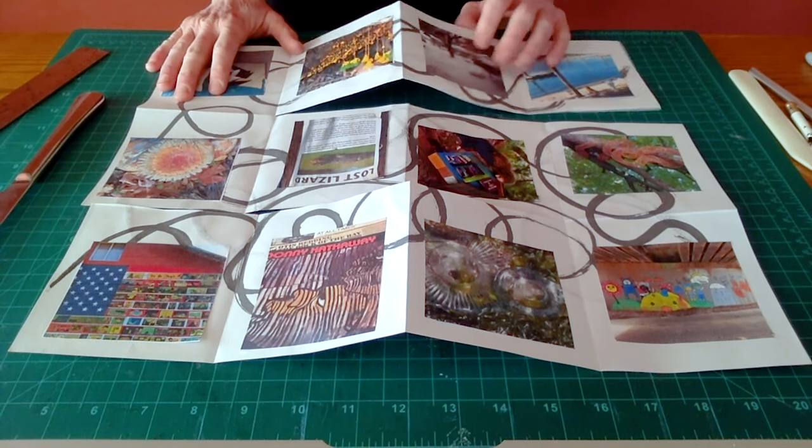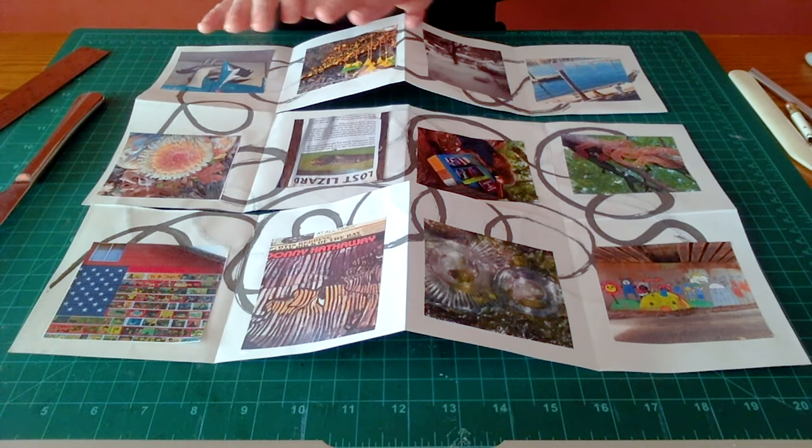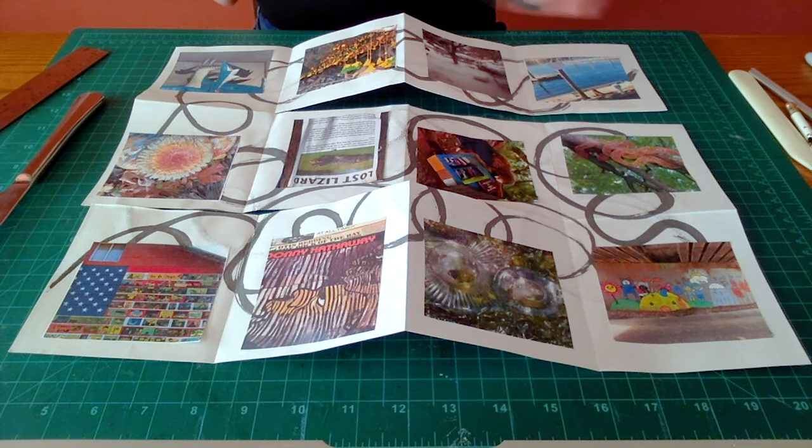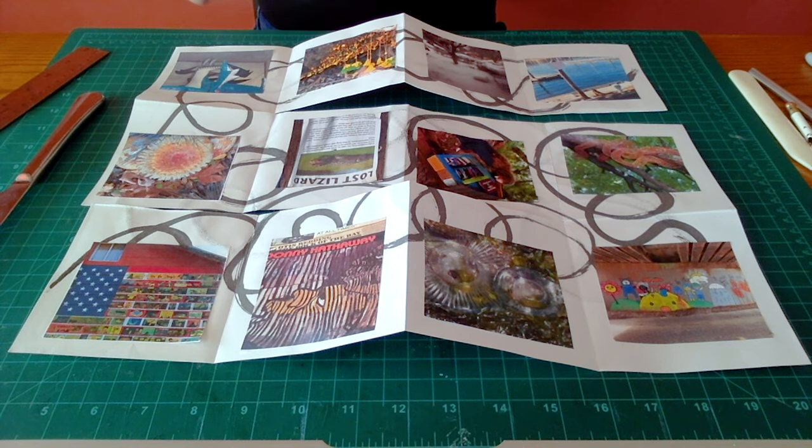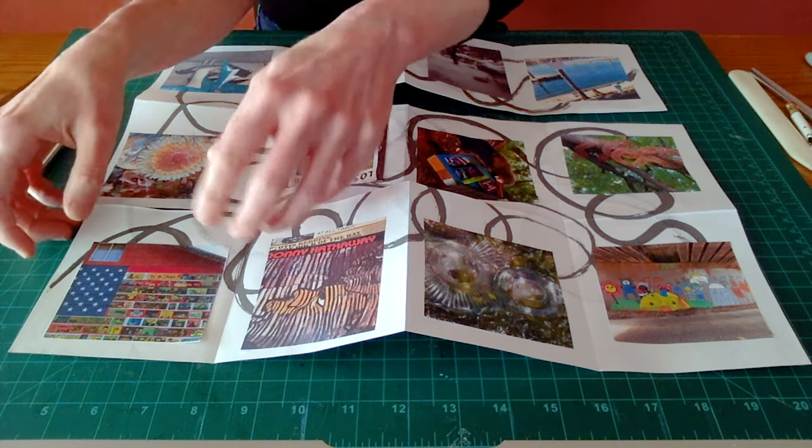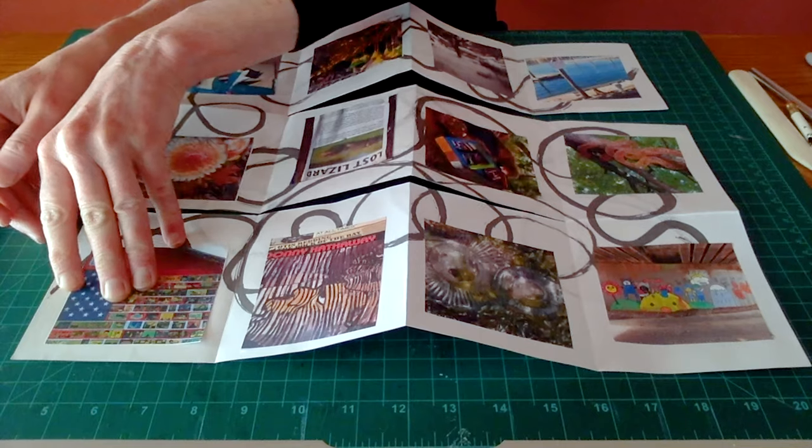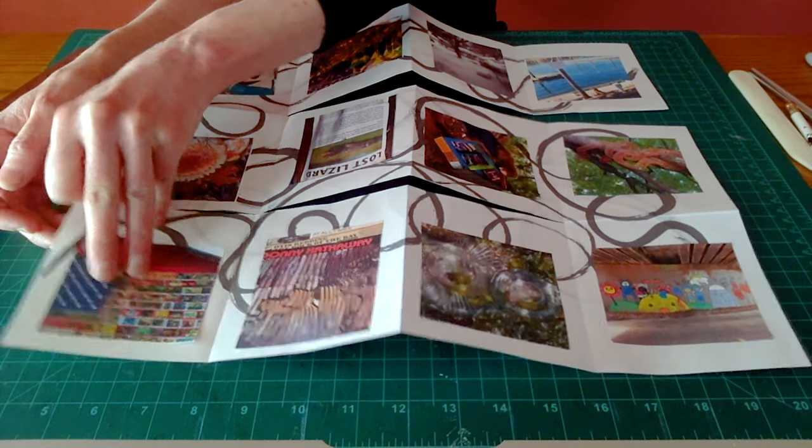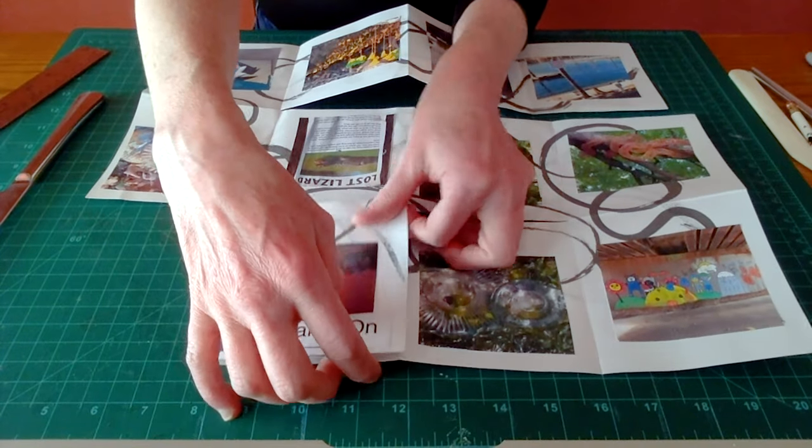So now I'm going to show you how to fold your snake book. This is a collection of photos that I took one in each month of the last year. We'll start at the bottom corner with page one, and we will just fold it in accordion style.